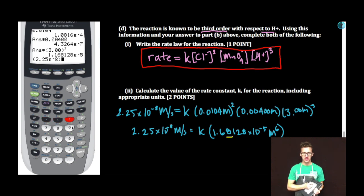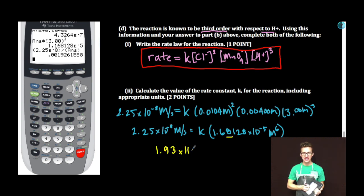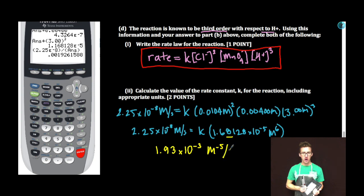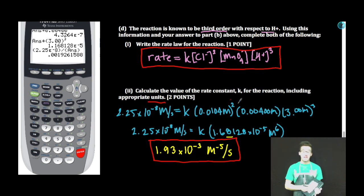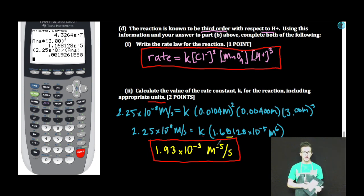Be careful with units — they are worth one point. We did molarity squared times molarity times molarity cubed, giving molarity to the sixth in the denominator. So molarity divided by molarity to the sixth gives molarity to the minus 5 per second. An easy trick: the overall reaction order is 2 plus 1 plus 3 equals 6. The units for the rate constant are always molarity to the negative of one less than the overall order — so molarity to the minus 5 per second.